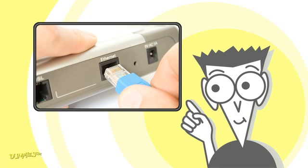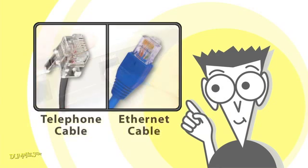To get started with iChat AV, first make sure your Ethernet cable is connected to your computer. The Ethernet cable is the fat one, not to be confused with the phone cable. You also need to have a webcam set up.